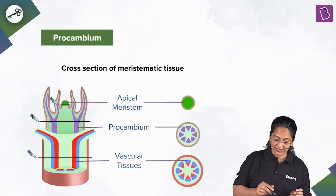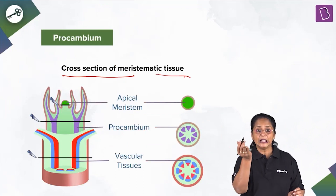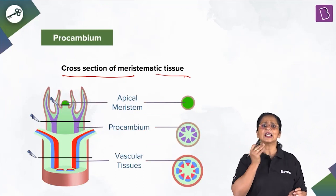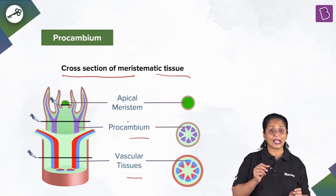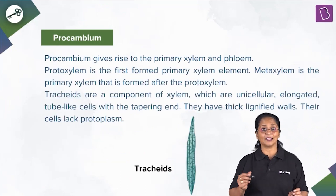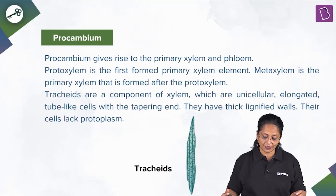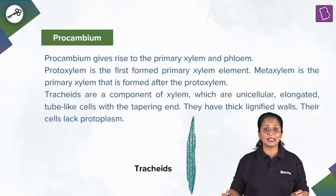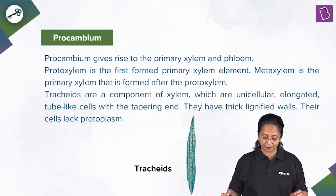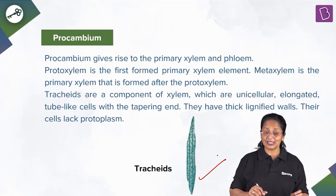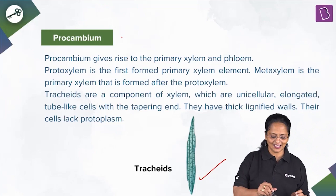This is a cross-section of meristematic tissue — when you take a thin section of the tip, you can see the vascular tissues and the cambial region. Procambium gives rise to primary xylem and phloem. Proto-xylem is the first-formed primary xylem element. Meta-xylem is formed after proto-xylem. Tracheids are a component of xylem — unicellular, elongated, tube-like cells with tapering ends, thick lignified walls, and no protoplasm. So the right answer is procambium.